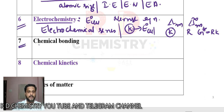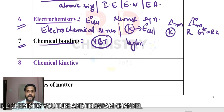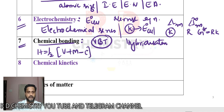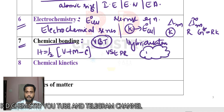On day 7, study chemical bonding. Very important here is VBT — you can predict hybridization using the formula: H = ½(V + M − C). Remember VSEPR theory as well. Every year they ask about MOT — how to calculate bond order, whether a molecule is diamagnetic or paramagnetic.